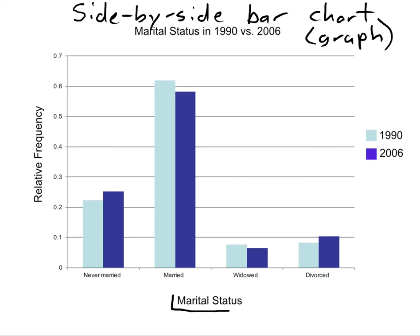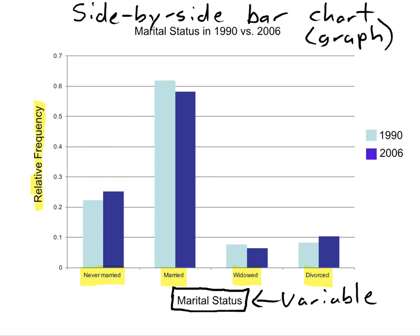What's going on here? We have a variable called marital status — that's one categorical variable being displayed, and we've got four different categories. The y-axis, another place you want to look at immediately, is showing us the relative frequency — the proportion of people in our sample with these different marital statuses. We have two bars for every category, reflecting two different time periods: light blue bars from 1990 and dark blue bars from 2006.